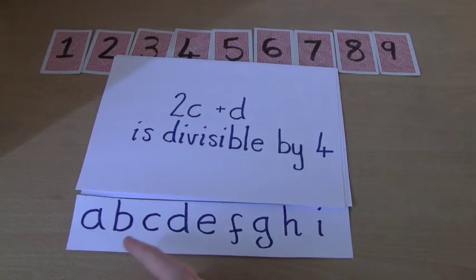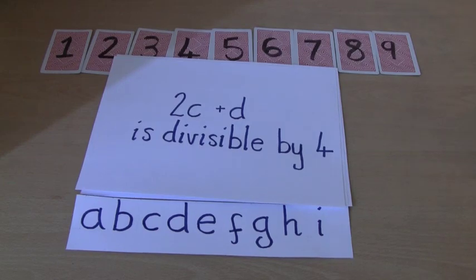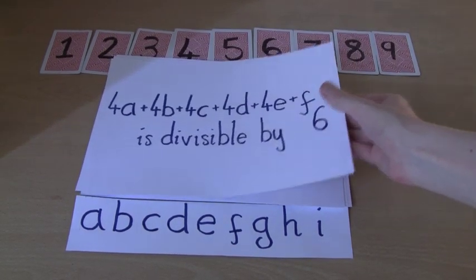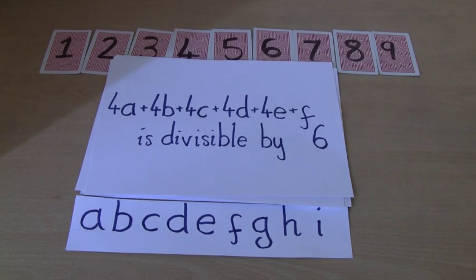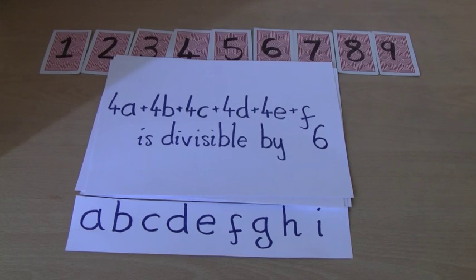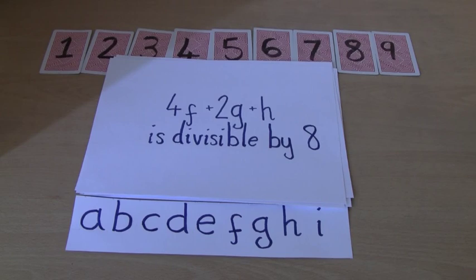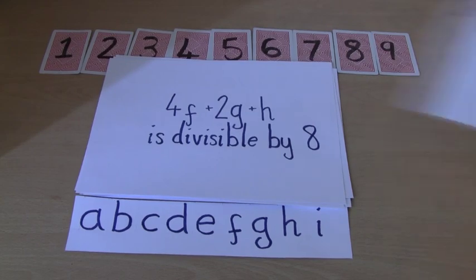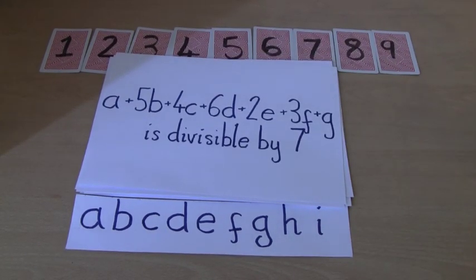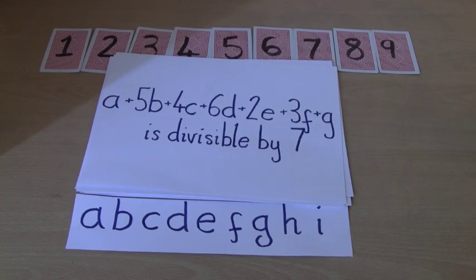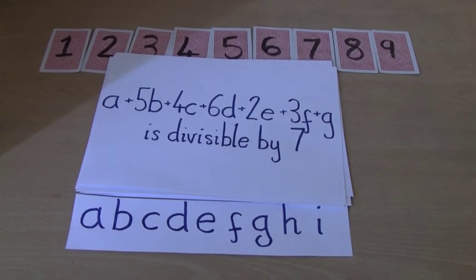What other conditions? Well, the first 6 digits, we can say 4A plus 4B plus 4C plus 4D plus 4E plus F is divisible by 6. What about the first 8 digits? I can say that 4F plus 2G plus H is divisible by 8. Now you may notice that I skipped a condition here. That's because the next one is quite complicated. And it says A plus 5B plus 4C plus 6D plus 2E plus 3F plus G is divisible by 7.